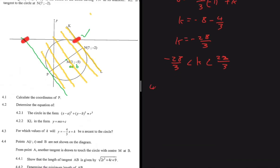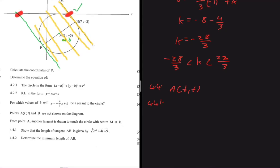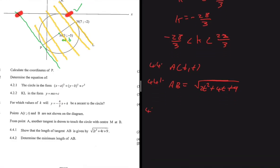For 4.4: we have point A with coordinates (T, T) and point B not shown on the diagram. Another tangent is drawn from A to touch the circle with centre M at B. Part 4.4.1 asks us to show that the length AB equals the square root of 2T squared plus 4T plus 9. I'd like to see your solutions in the comments. Let's proceed to 4.4.2: determine the minimum length of AB.